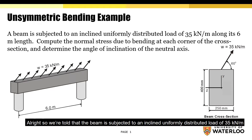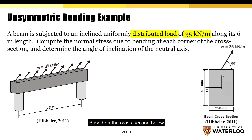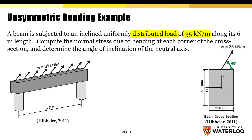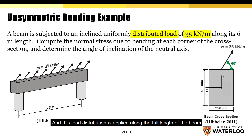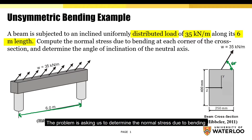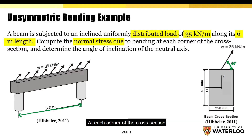We're told that the beam is subjected to an inclined uniform distributed load of 35 kilonewtons per meter. Based on the cross section, the inclined load is applied at an angle of 60 degrees from the top of the beam, and this load distribution is applied along the full length of the beam, which in this case is 6 meters.